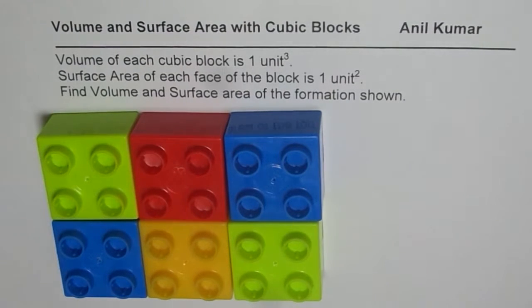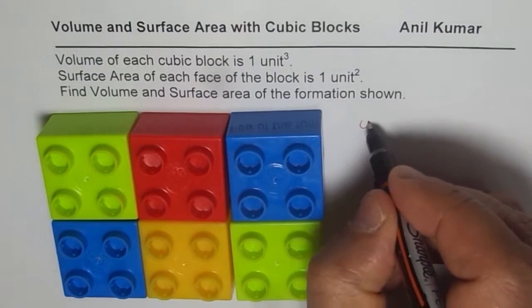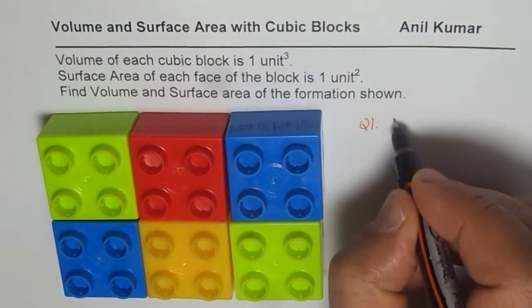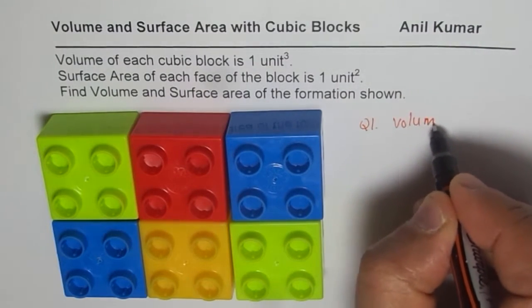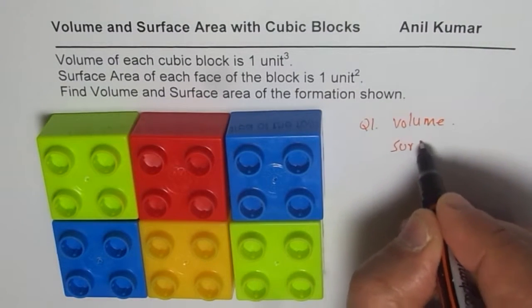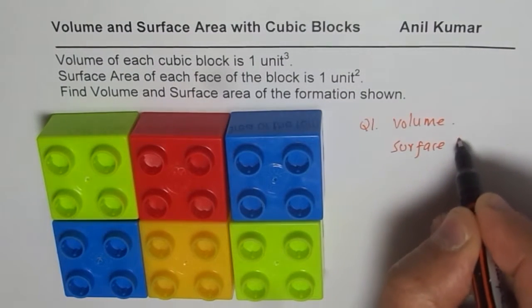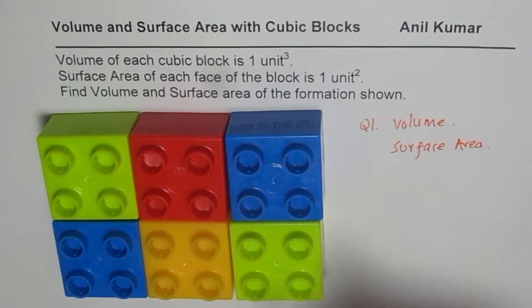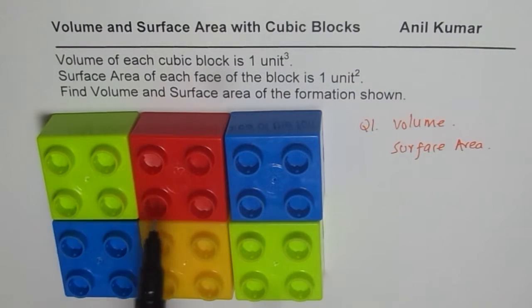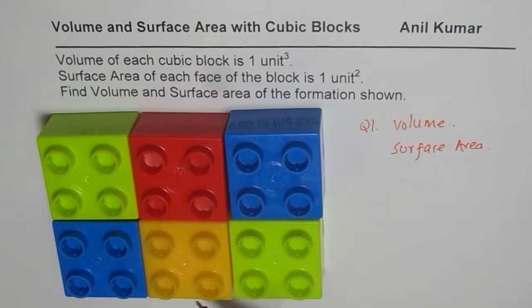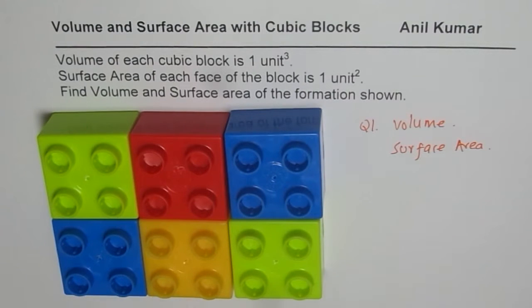Now the question for you is, question 1: find volume and surface area of the formation shown here. Here we have 6 cubic blocks kept adjacent to one another. Do you see that? So what is the volume of this and what is the surface area? Also include the area of the bottom. That is your first question.